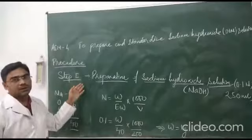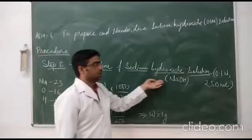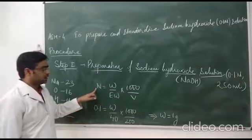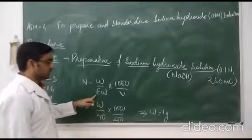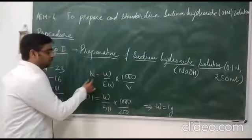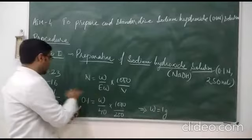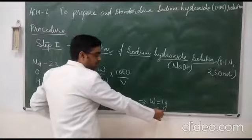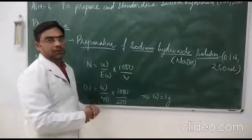Step number one is to prepare the sodium hydroxide solution — that is 0.1 normal, 250 ml. Using the formula where N is the normality, W is the weight of sodium hydroxide, 40 is the equivalent weight and molecular weight, and volume is 250 ml. When we calculate, the weight comes out to 1 gram. So we have to take 1 gram of sodium hydroxide and dissolve it into 250 ml of water.